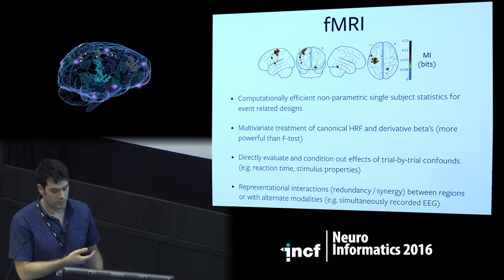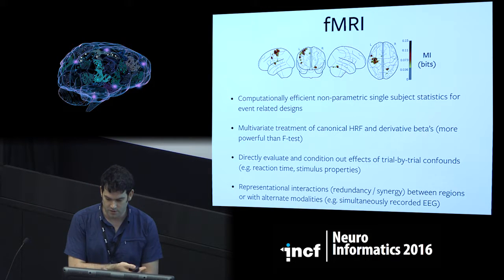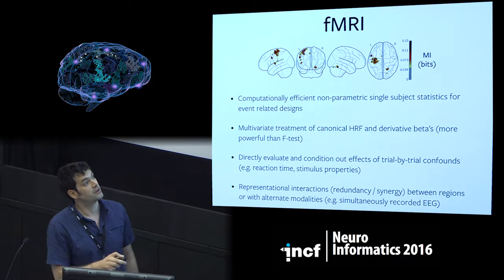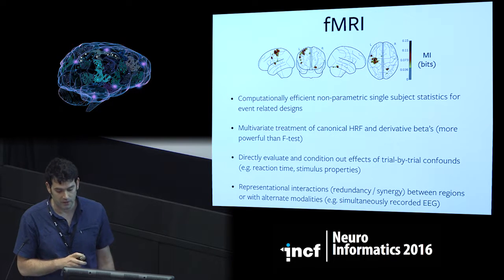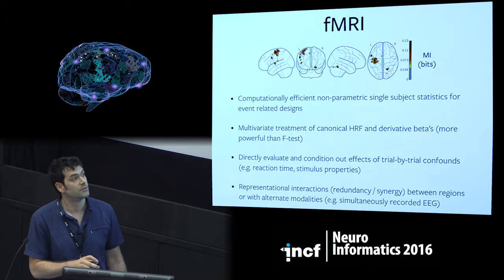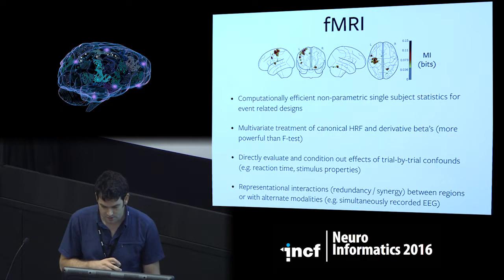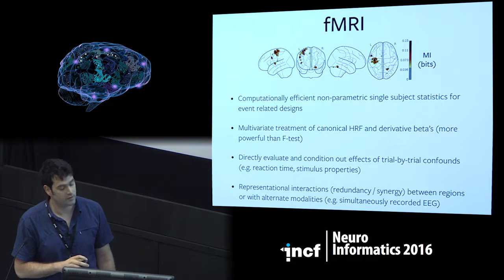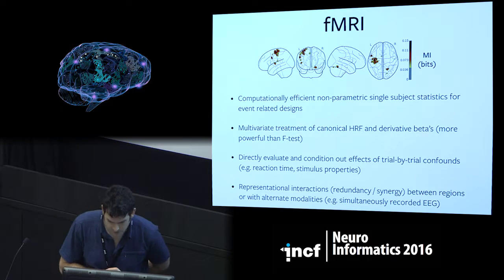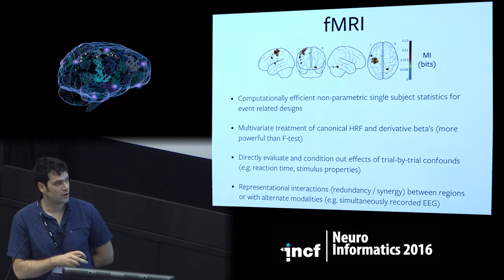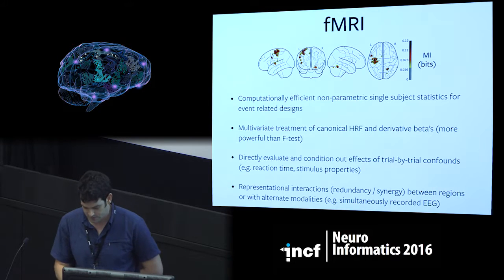With the information theoretic framework we have the advantage that we can now look at the redundancy between regions, between individual voxels, and so on. Some of the advantages: we can do computationally efficient non-parametric single-subject statistics. We can consider multivariate betas, which I think could be more powerful than the F-test, which tests a hypothesis that at least one of them is significant — here we can really find multivariate effects. We can directly evaluate and condition out effects of other trial-by-trial confounds, and we could look at representational interactions, which in information theory we call redundancy or synergy, either between regions, between individual voxels, or with alternative modalities such as simultaneously recorded EEG.